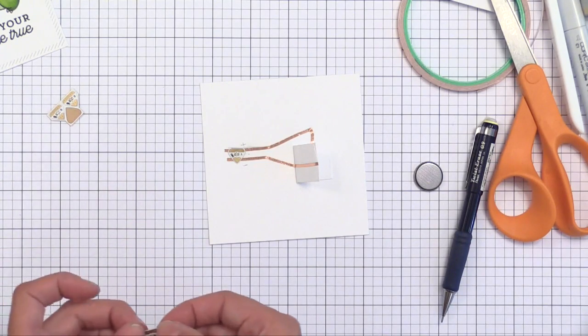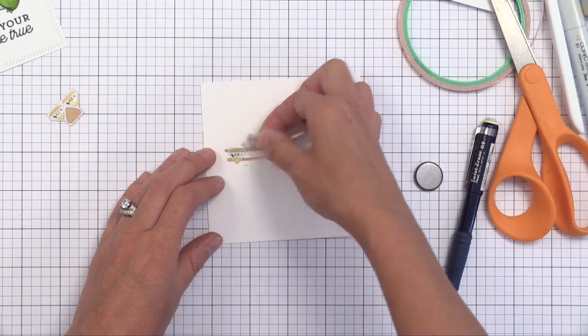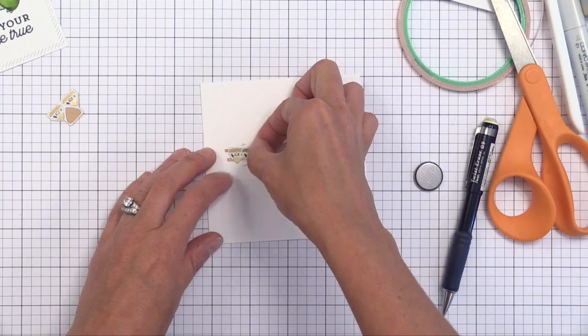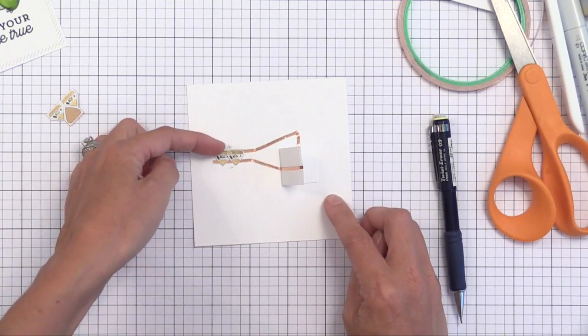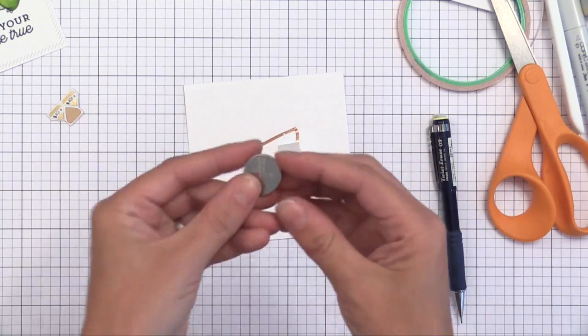I'm actually going to put two lights down so I have double light. I kind of overlapped them and it worked just fine. This will work great as long as you connect the plus sign of the battery with the plus sign of the lights. It's super easy.